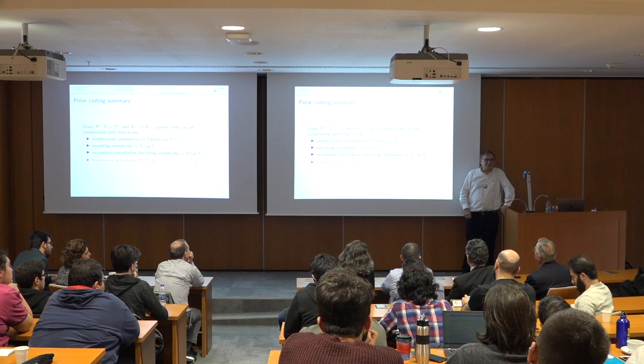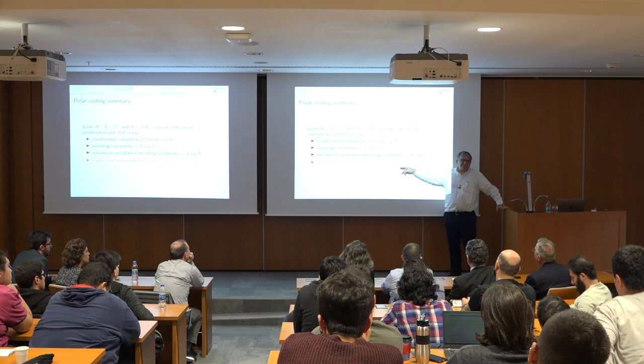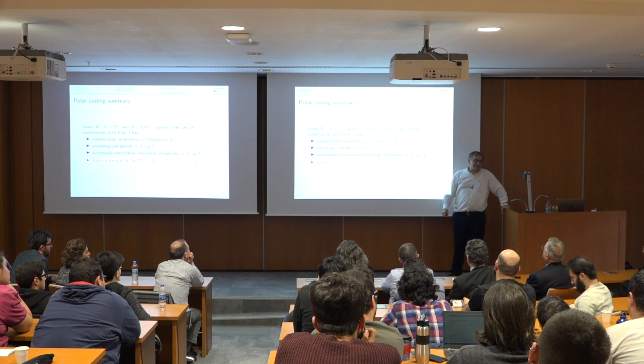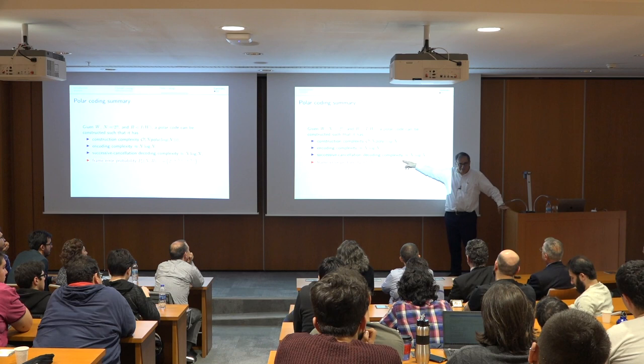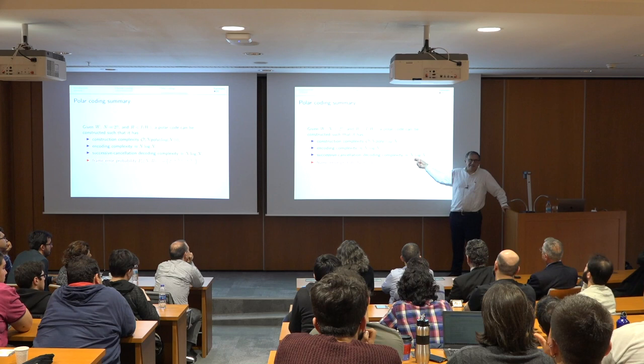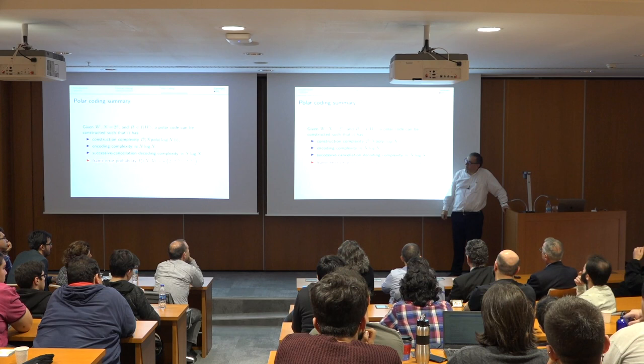This is not the best available reliability — Shannon's random codes have 2^(-n × constant), which is much better. On the other hand, the decoding complexity for random codes is exponential in n, so they cannot be implemented and are not considered a solution to the decoding problem. Thank you very much. I will stop here. Thank you for coming.